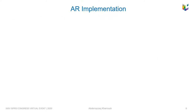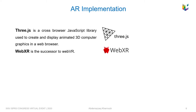The next step is to proceed to the web-based augmented reality implementation with Three.js and the WebXR API. Three.js provides three main things: scene, camera, and a render function.